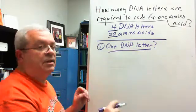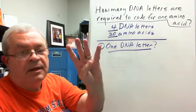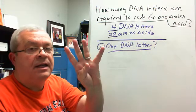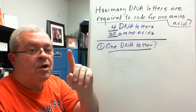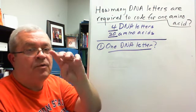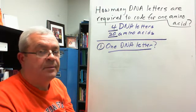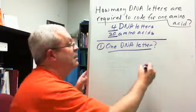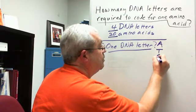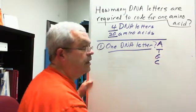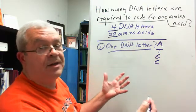And so you might say, what are you talking about, Professor? Well, I'm talking about taking our four DNA letters one at a time. How many different things can you code for if you take your four DNA letters one at a time? Not very many. I mean, that's an A, or a T, or a G, or a C.